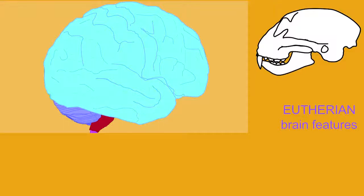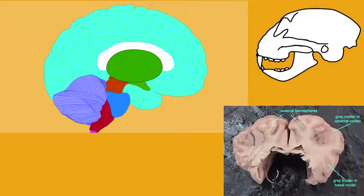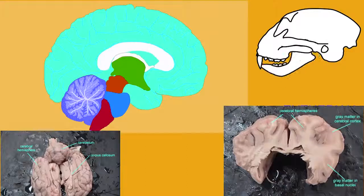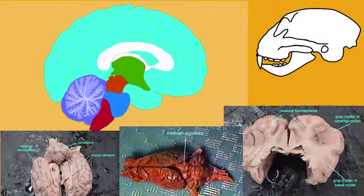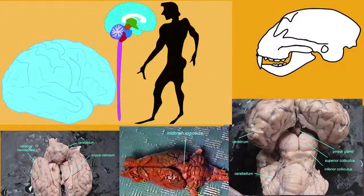Eutherian mammals share many features of their brains, primarily involving the great increase in the size of the cerebrum. Eutherians connect the two cerebral hemispheres using a corpus callosum, and the expansion of the cerebrum ends the midbrain exposure, which allowed the midbrain to be visible on the dorsal surface of the brain.